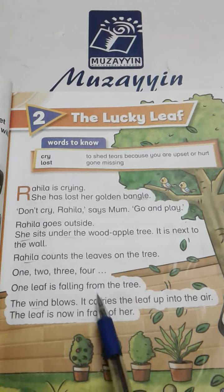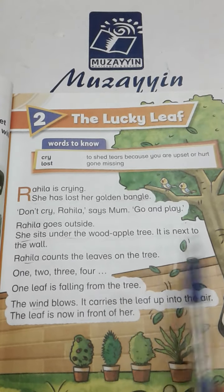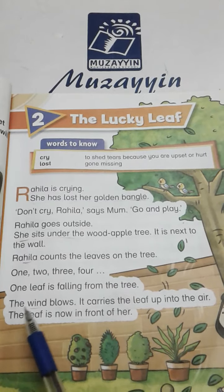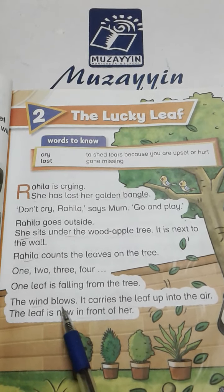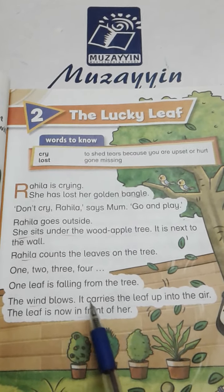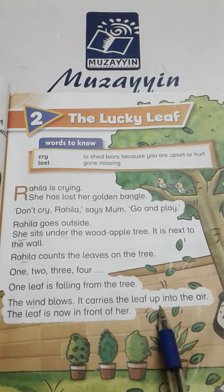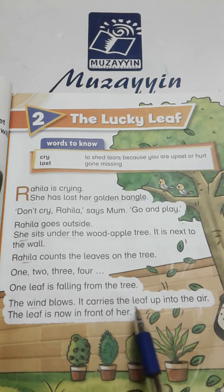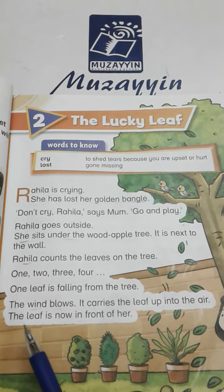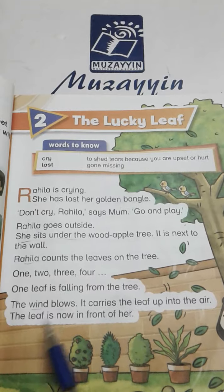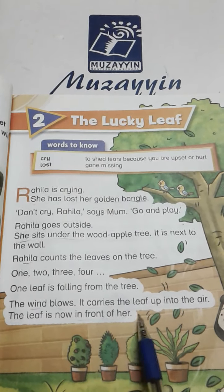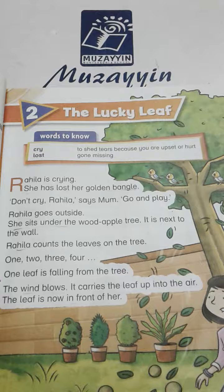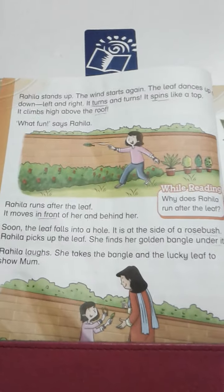One leaf is falling from the tree — ایک پتہ جو ہے وہ درخت سے نیچے گر رہا ہے. The wind blows — آندھی چلتی ہے. It carries the leaf up into the air — وہ جو آندھی ہوتی ہے، اس پتے کو ہوا میں لے جاتی ہے. The leaf is now in front of her — اب جو پتہ ہے وہ اس کے سامنے ہوتا ہے.